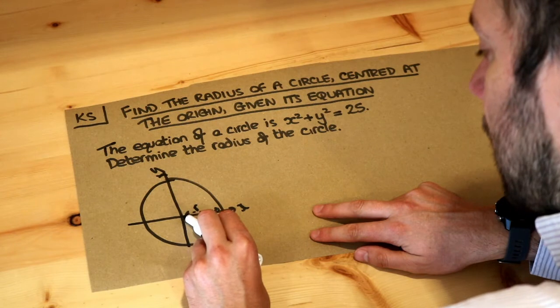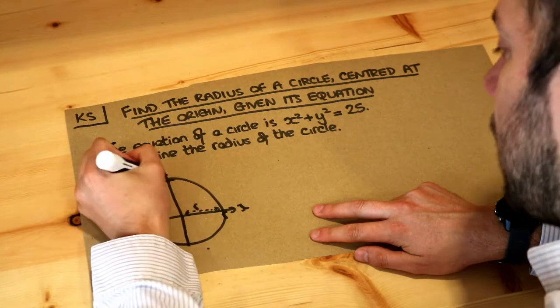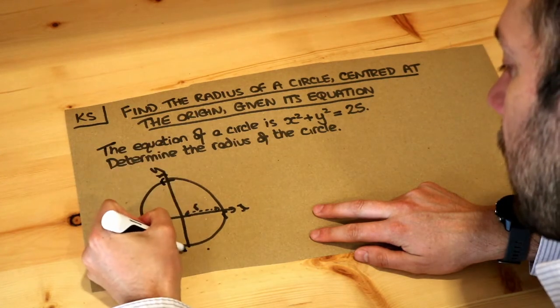If you think about it, if that distance is r then this would be an x value of r here, that would be minus r by symmetry, that would be r up here, that would be minus r.